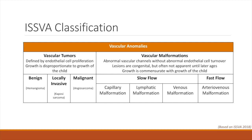The ISSVA classification of vascular anomalies arises from the work of Mullikan and Glavatsky in 1982. This classification system divides vascular anomalies into two primary groups based on their histopathology. The first and most common group is vascular tumors — true neoplasms defined by the presence of endothelial cell proliferation or mitoses on histology. Because these tumors are defined by abnormal cellular proliferation, the growth of the lesion will not be proportional to the growth of the child. We can further define these lesions as benign, locally invasive, or malignant.